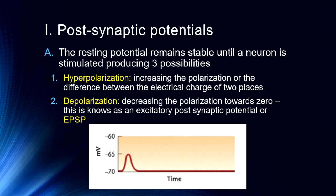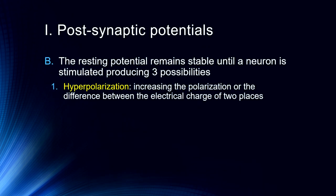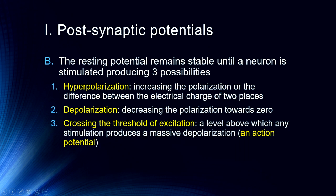Hyperpolarization is an IPSP. Depolarization occurs when we start moving the electrical charge towards zero — making it less negative — so there is a lower level of charge across the membrane. This is known as an excitatory postsynaptic potential, or EPSP, because it pushes the neuron towards its threshold level at which it will generate an action potential. The third possibility is that we depolarize the cell sufficiently to cross the threshold of excitation — a level above which any stimulation will produce a massive depolarization, or action potential. That is the whole process by which everything is accomplished in the brain.